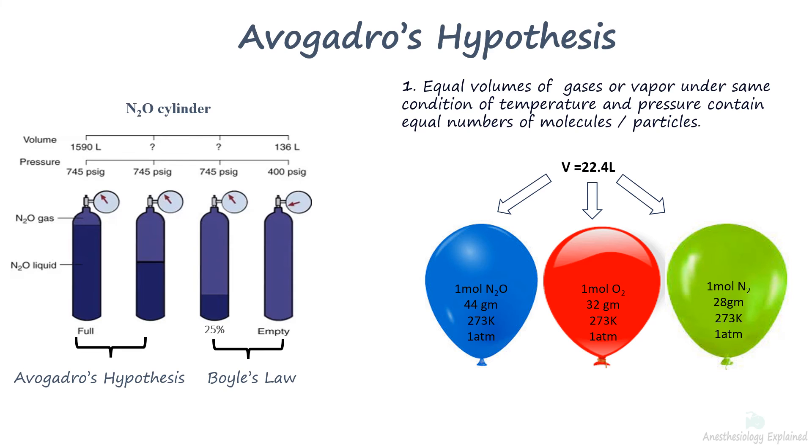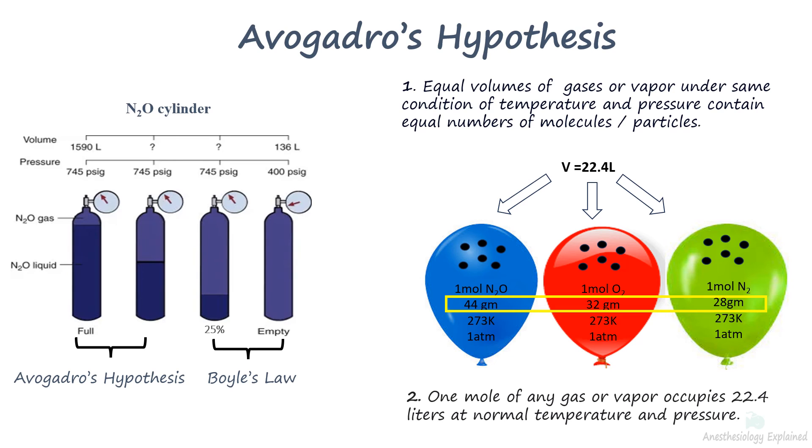Hypothetically in this diagram, 6 molecules each. The hypothesis also states that 1 mole of any gas or vapor occupies 22.4 liters at normal temperature. In other words, 44 grams of nitrous oxide, 32 grams of oxygen and 28 grams of nitrogen occupies 22.4 liters. These weights are the molecular weight of 1 mole of aforementioned gas.